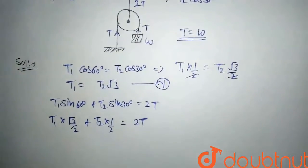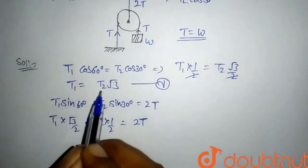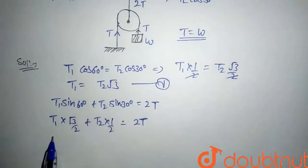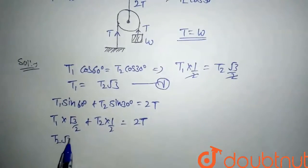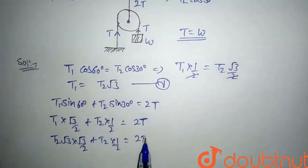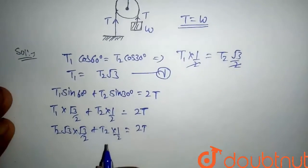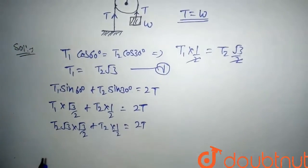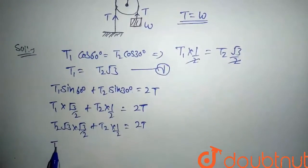So here we will put the value of T1 as T2√3. So here T2√3 times √3/2 plus T2 times 1/2 equals 2T.